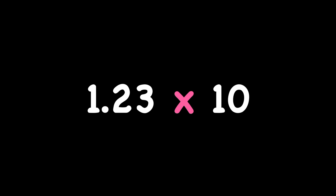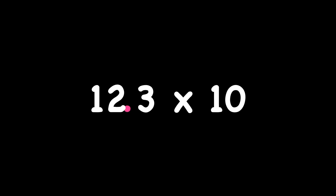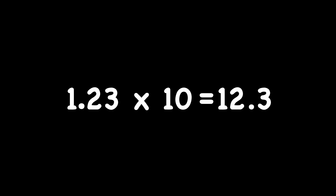In this case, we're multiplying. That tells me I'm going to move my decimal point to the right. And we're multiplying by ten, that means I'm going to move it one place to the right, which would put it right there. That's actually my answer. One and twenty-three hundredths times ten equals twelve and three tenths. All I had to do was move my decimal point one place to the right to make it ten times greater.